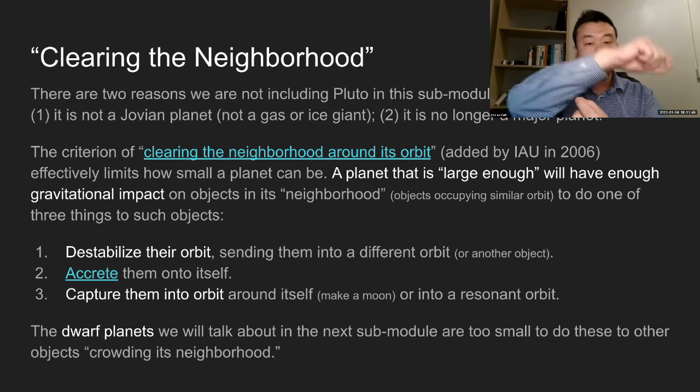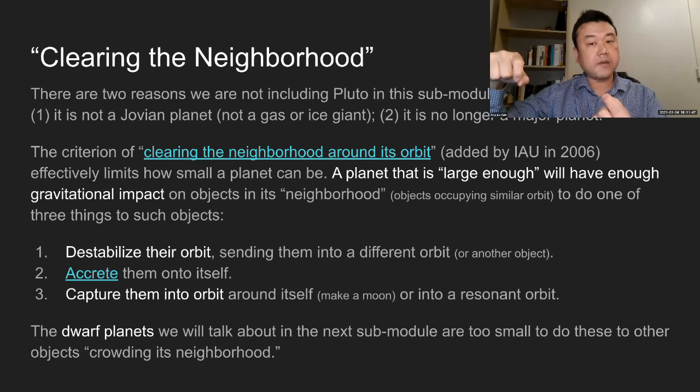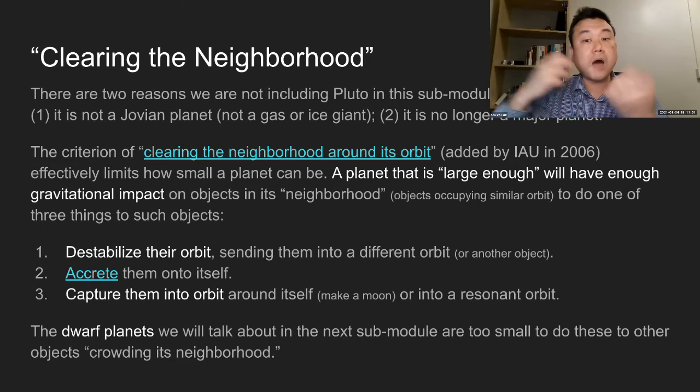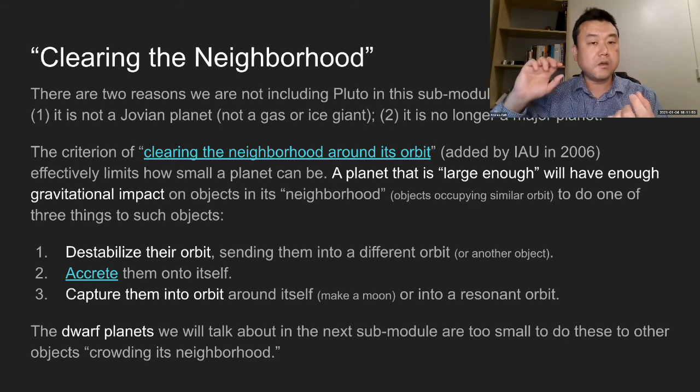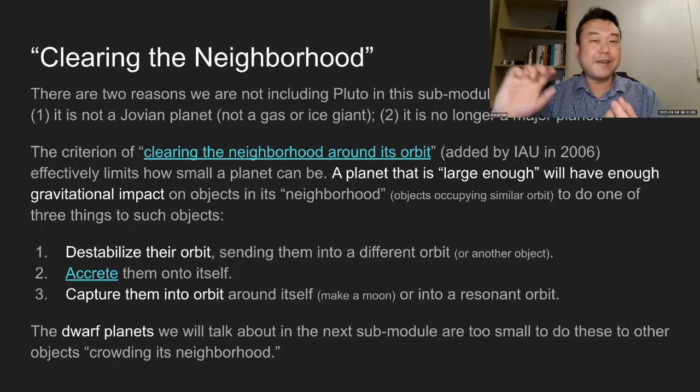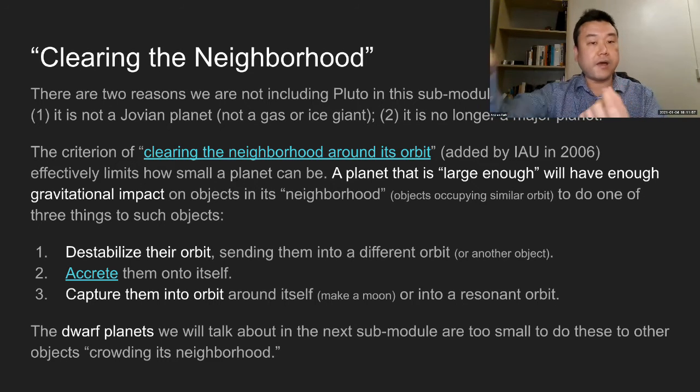And what it means is that in its orbit, that planet is the only object that is gravitationally dominant in the neighborhood, in the area or the distance around its orbit.